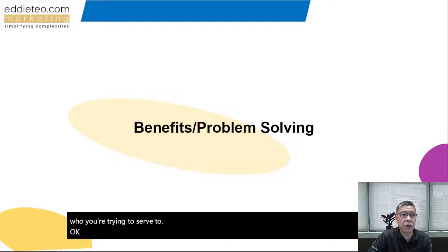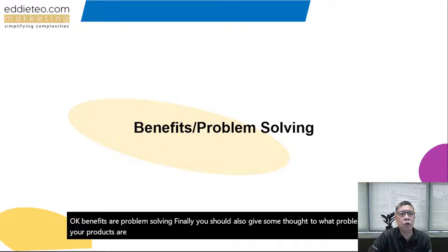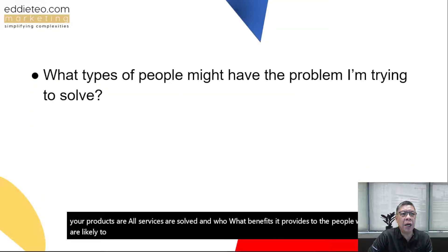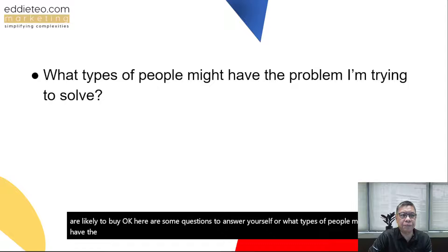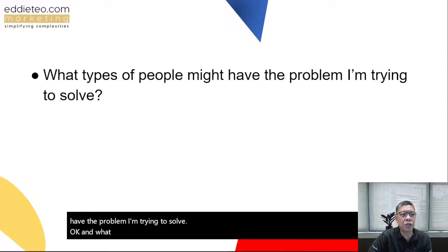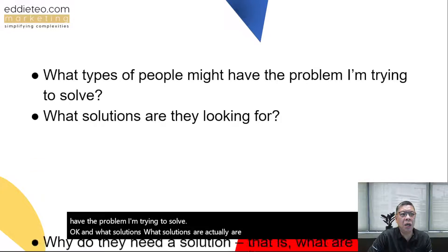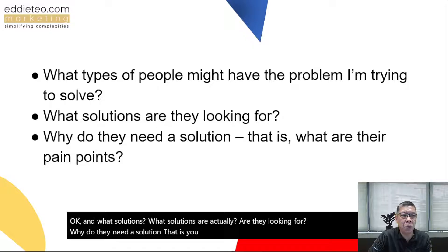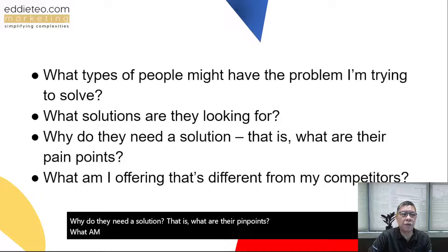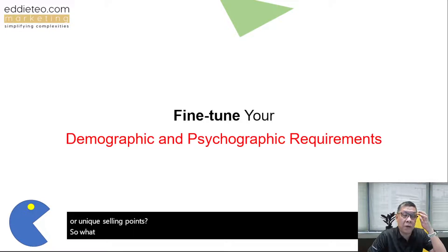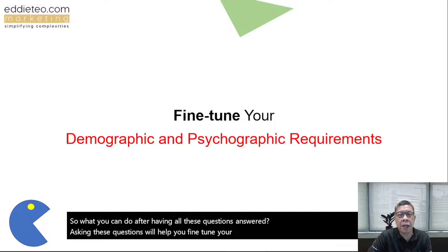Benefits and problem solving: you should also give thought to what problems your products or services solve and what benefits they provide to likely buyers. Here are some questions to ask yourself: What types of people might have the problem I'm trying to solve? What solutions are they looking for? Why do they need a solution — what are their pain points? And what am I offering that's different from my competitors — what's my unique selling proposition? Asking these questions will help you fine-tune your demographic and psychographic requirements.